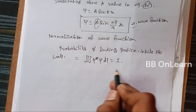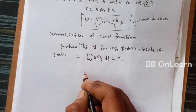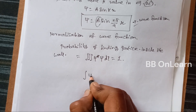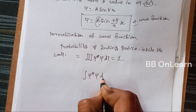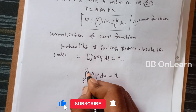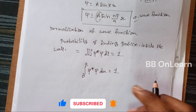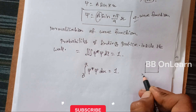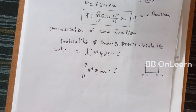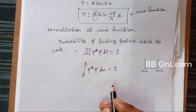This is for 3D. For finding the particle in 1D, the integral of psi-star times psi dx equals 1, with limits from 0 to a. The limits are 0 to a because the potential well goes from x equals 0 to x equals a. That is why the integral from 0 to a of psi-star psi dx equals 1.